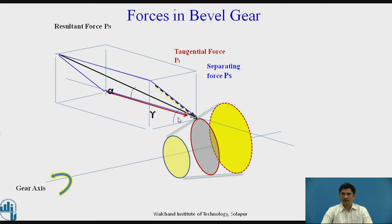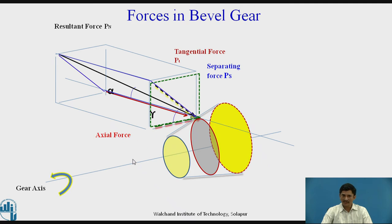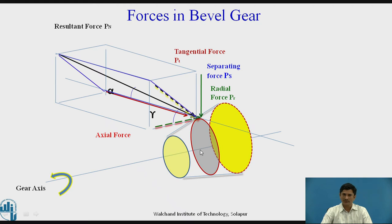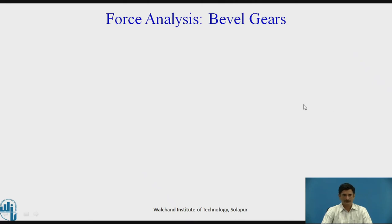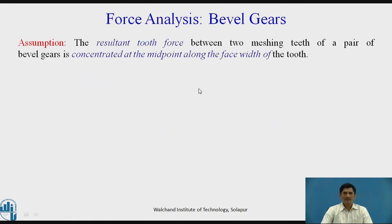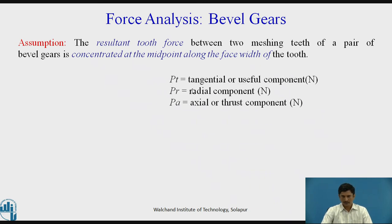This force is inclined at an angle equal to gamma. Using the green frame of reference, the first force is the axial force, as it is parallel to the axis of the shaft. The second force is the radial force, which is always directed towards the center of the gear. At the pitch point we can show all the forces. The assumption in this analysis is that the force between the meshing teeth is concentrated at the midpoint of the face width of the tooth. Pt is the tangential or useful component, PR is the radial component, and PA is the axial or thrust component.